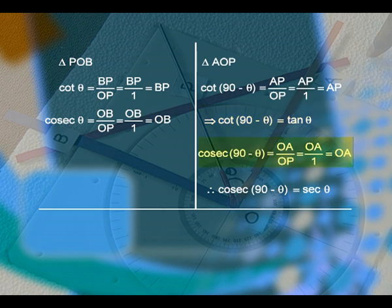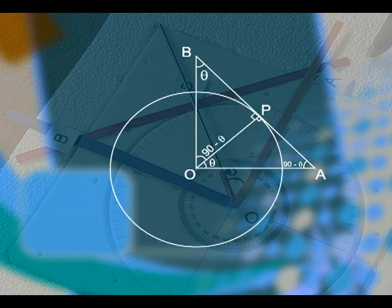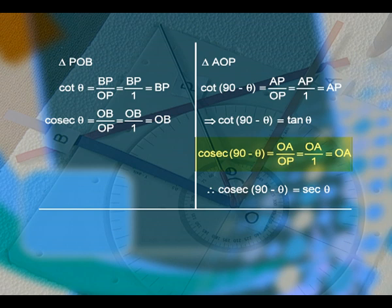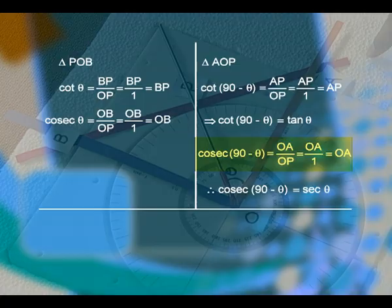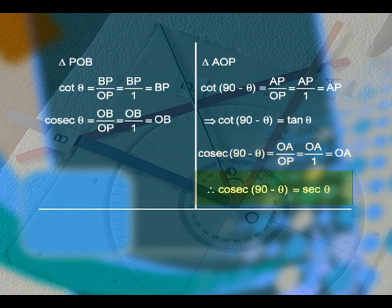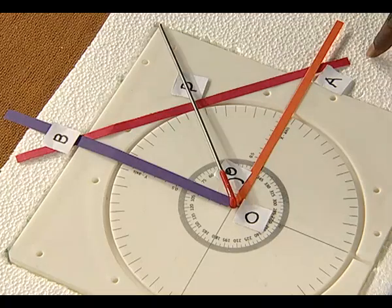Now, cosecant(90 minus theta) in the same triangle A, P, O equals OA by OP, equal to OA by 1, equal to OA. We know that OA is nothing but secant theta. Therefore, cosecant(90 minus theta) is equal to secant theta. Children, we have seen all the trigonometric ratios using this circular disc. You can use the circular disc for any number of degrees and verify the result. Hope you have understood.